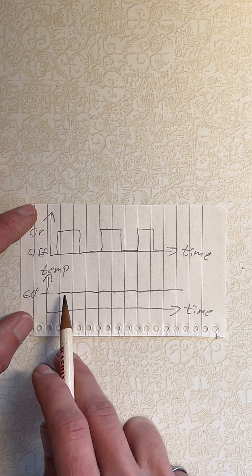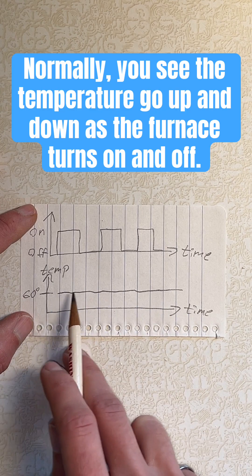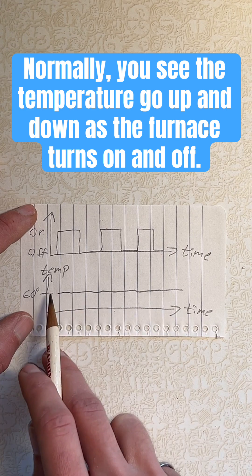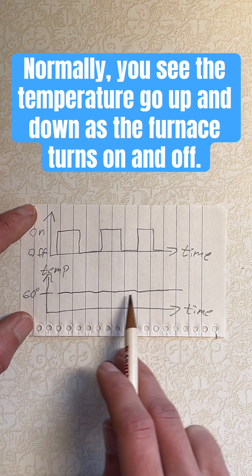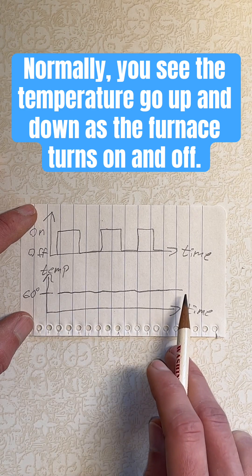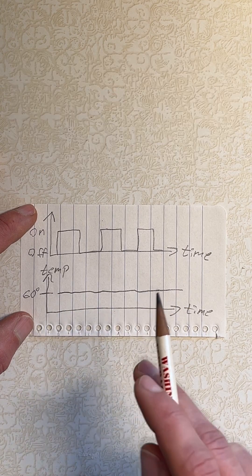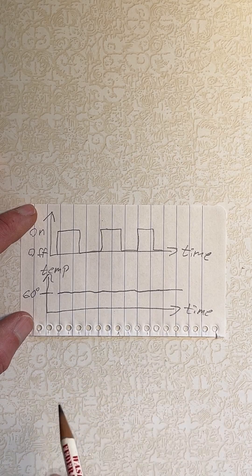This is not normal. It's hard on a furnace to try to maintain a perfectly flat line, and so that meant I just needed to change a setting in the thermostat.